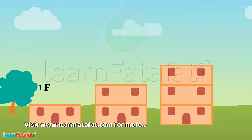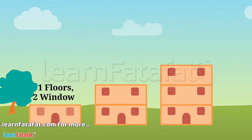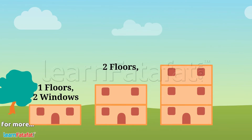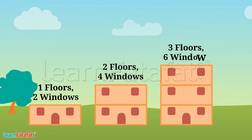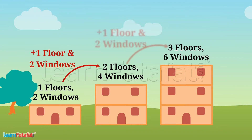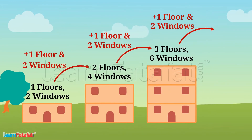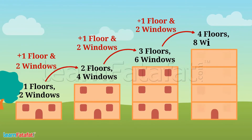One floor, two windows. Two floors and four windows. Three floors and six windows. So, one floor and two windows are increasing. So, the next building will have four floors and eight windows.